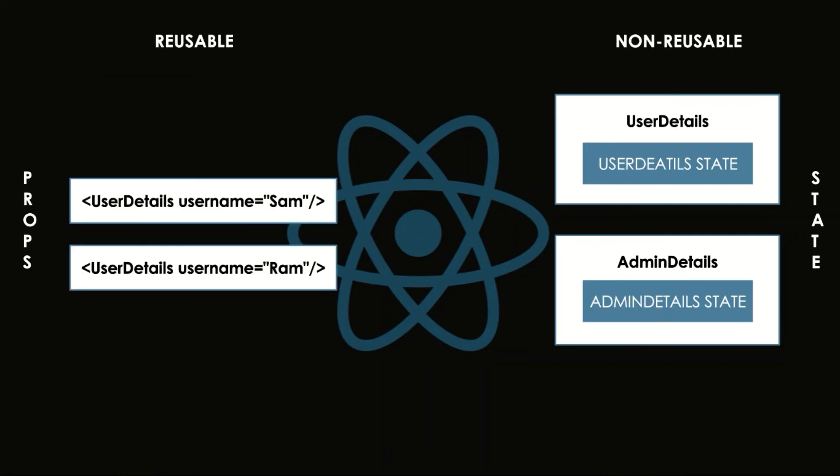Props allow us to reuse the component just by changing the input values. However, state doesn't really help in reusing a component since every component has its own state.